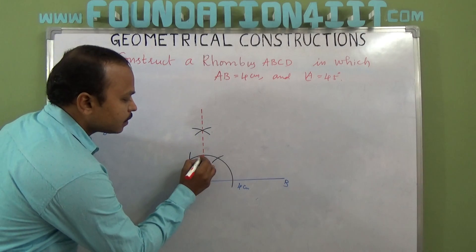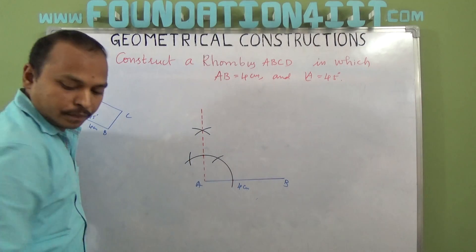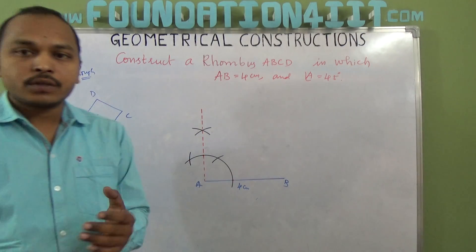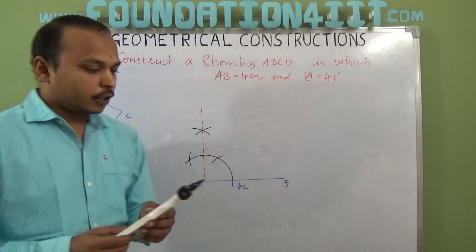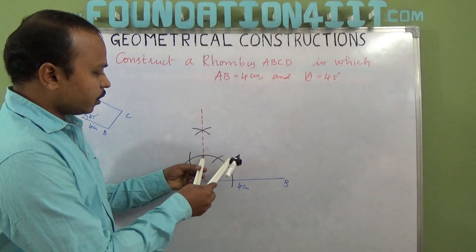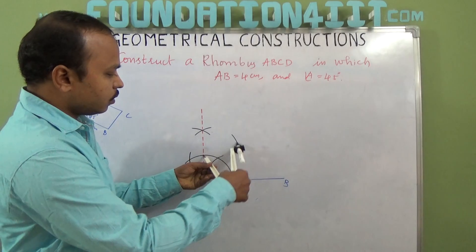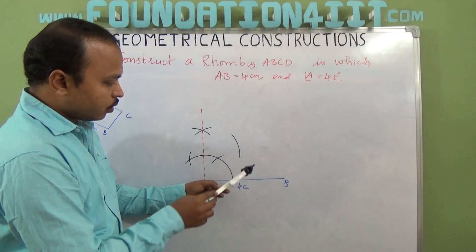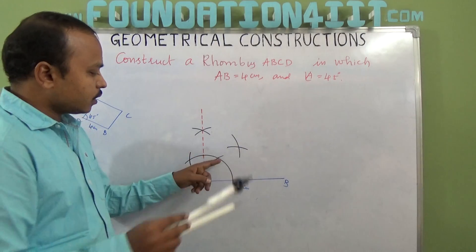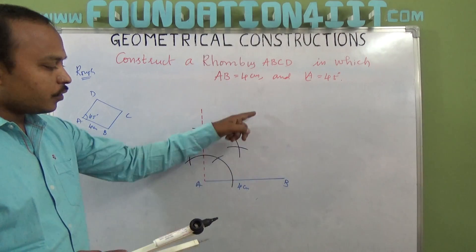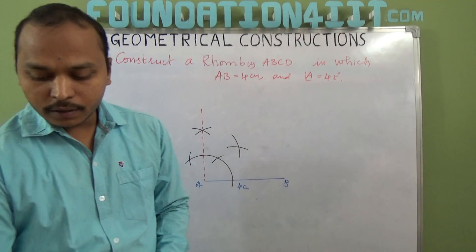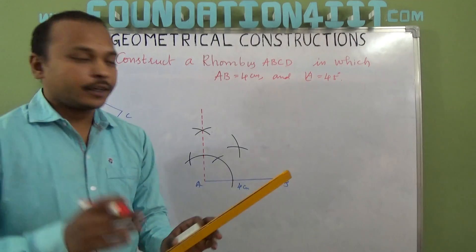So here, this is 90. Zero to 90, if you bisect, you'll get 45 degrees. From here draw an arc and from this center draw an arc. 60, 90, and 120—90 and 0 you should bisect, then you'll get exactly 45 degrees.